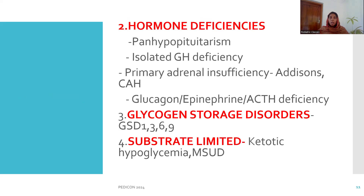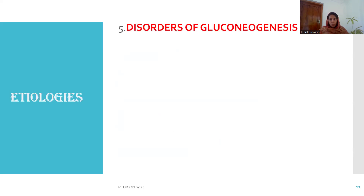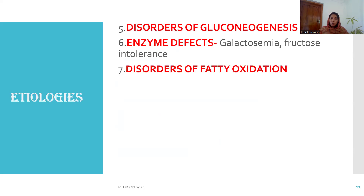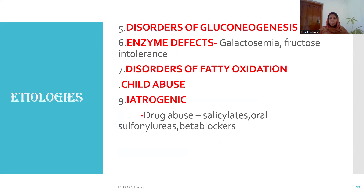Hormone deficiencies of counter-regulatory hormones are another cause. In pan-hypopituitarism, isolated GH deficiency, primary adrenal insufficiency as in Addison's disease, or ACTH and epinephrine deficiencies, glucose levels fall. Glycogen storage disorders, substrate-limited disease — that is ketotic hypoglycemia — or maple syrup urine disease are also causes. Others include disorders of gluconeogenesis, enzyme defects as in galactosemia, fructose intolerance, disorders of fatty acid oxidation, child abuse, or iatrogenic drug use such as salicylates, oral sulfonylureas, or beta-blockers.